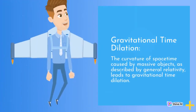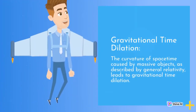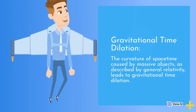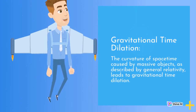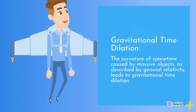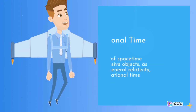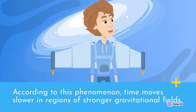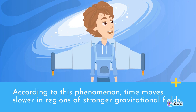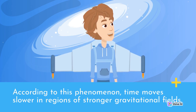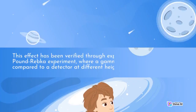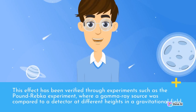Gravitational Time Dilation: The curvature of space-time caused by massive objects, as described by general relativity, leads to gravitational time dilation. According to this phenomenon, time moves slower in regions of stronger gravitational fields. This effect has been verified through experiments such as the Pound-Rebka experiment, where a gamma-ray source was compared to a detector at different heights in a gravitational field.